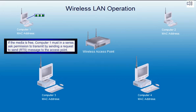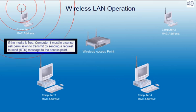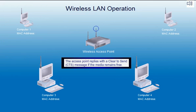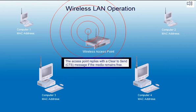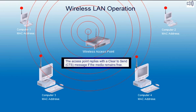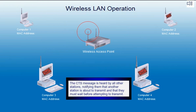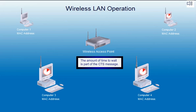If the media is free, computer 1 must in a sense ask permission to transmit by sending a request to send message to the access point. The access point replies with a clear to send message if the media remains free. The CTS message is heard by all other stations, notifying them that another station is about to transmit and that they must wait before attempting to transmit. The amount of time to wait is part of the CTS message.